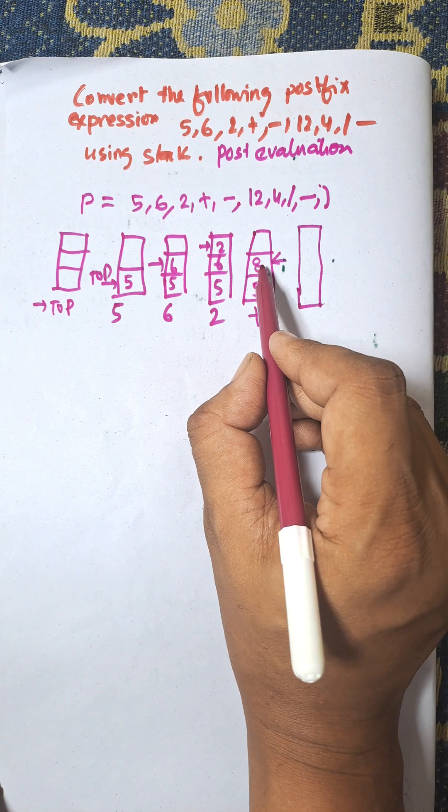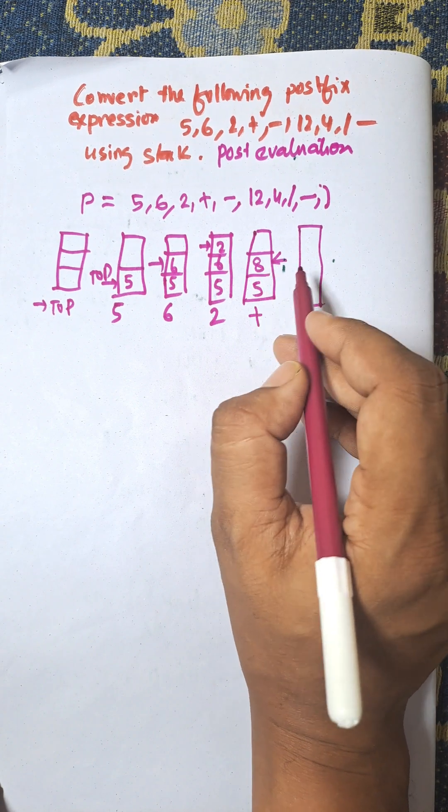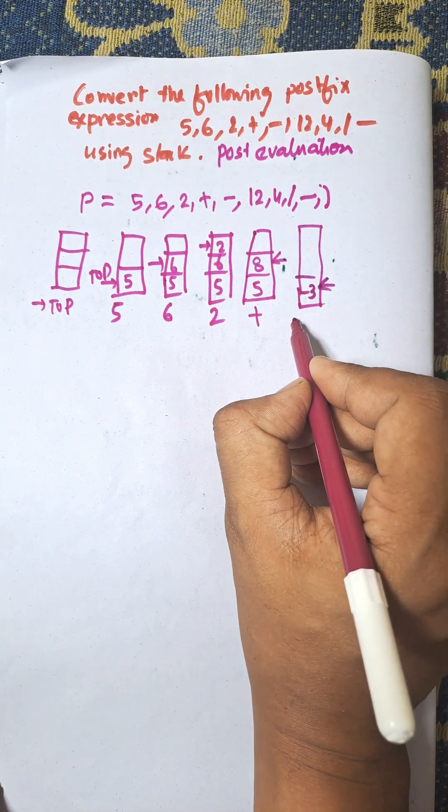Now, minus. 5 minus, we need to pop 8 and 5, then 5 minus 8, equal to minus 3. That is for minus.